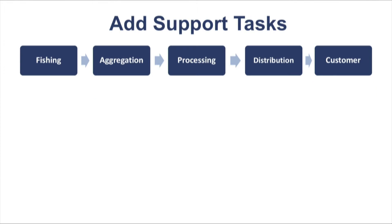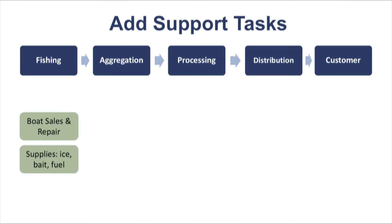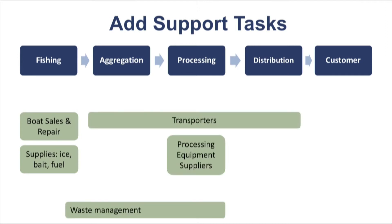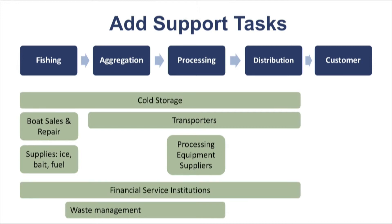Next, you will want to map the support players. Again, these will be mapped according to when they play a role along the flow chart. So for example, services that directly support fishermen will be at the beginning of the flow chart. Waste management, processing and equipment suppliers, and transporters will participate further along. And cold storage and financial service institutions, for example, span most of the chain. Some of these players could be considered either part of the core chain or as support tasks, such as ice, bait and fuel, cold storage, and transportation. Don't worry too much about what category things go in — just get everybody included on the map so that you can start to see the big picture and how they all connect.